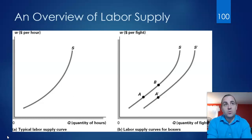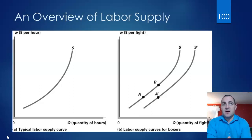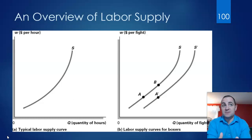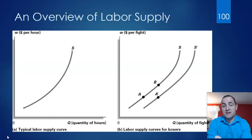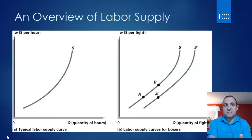Going back to 1991, the average major league baseball salary was approximately 36 times per capita GDP. By 2016, it was about 84 times per capita GDP — so over that period it went from 36 times to 84 times. Salaries in the other major sports in North America have also shown similar growth.